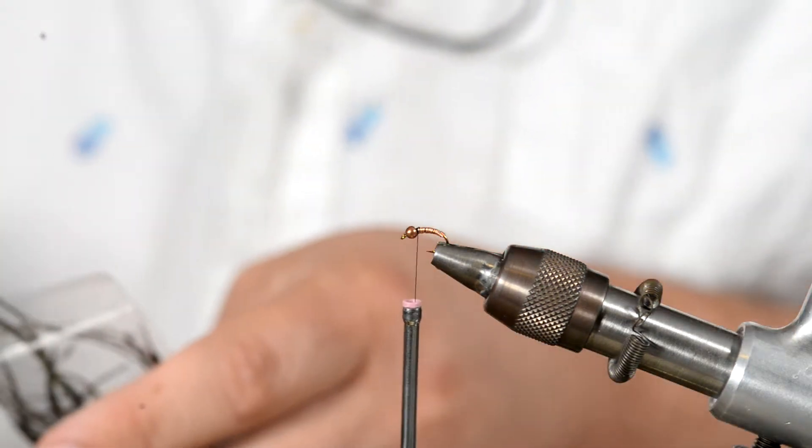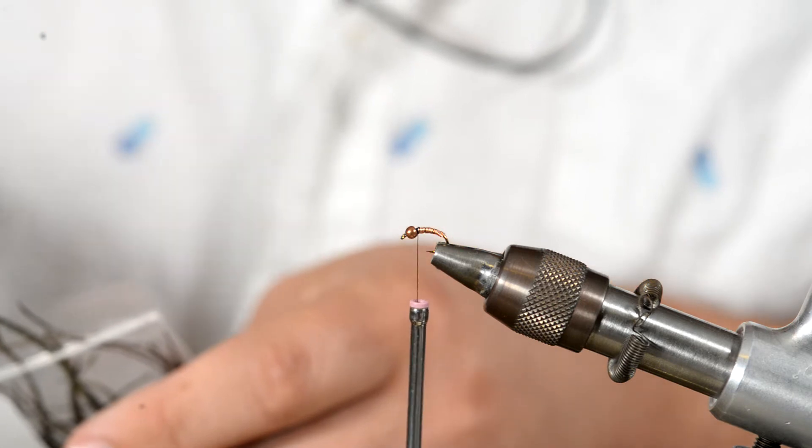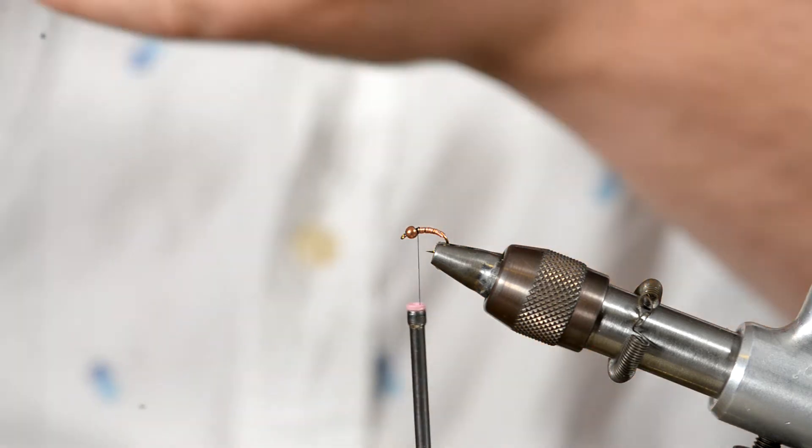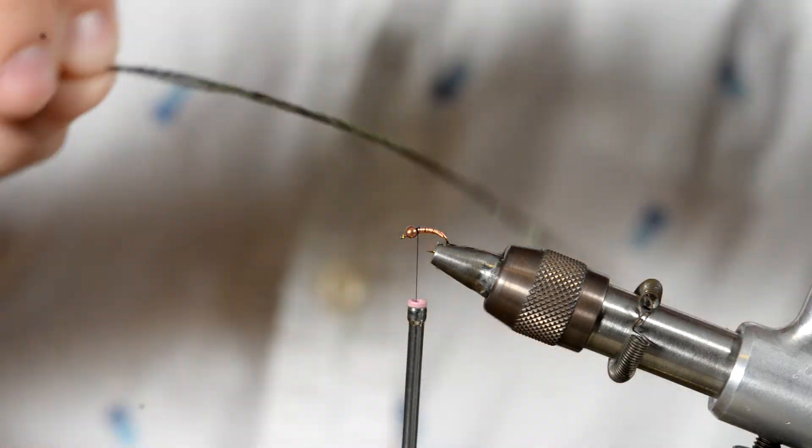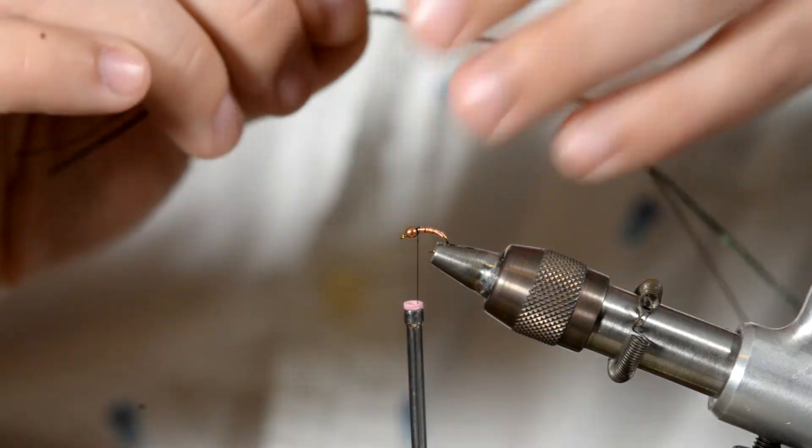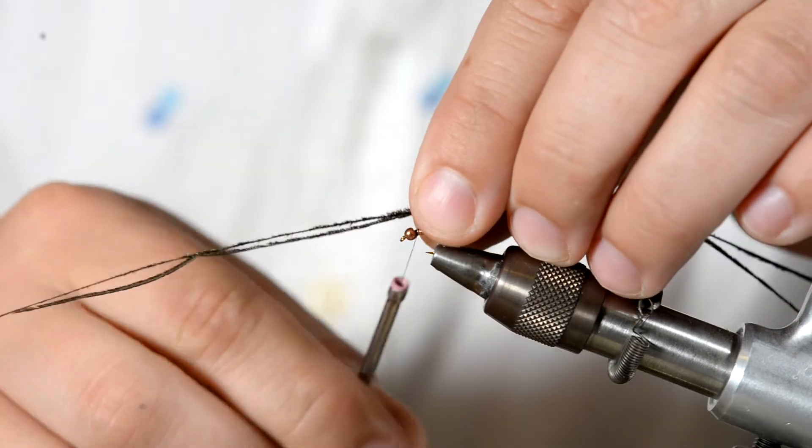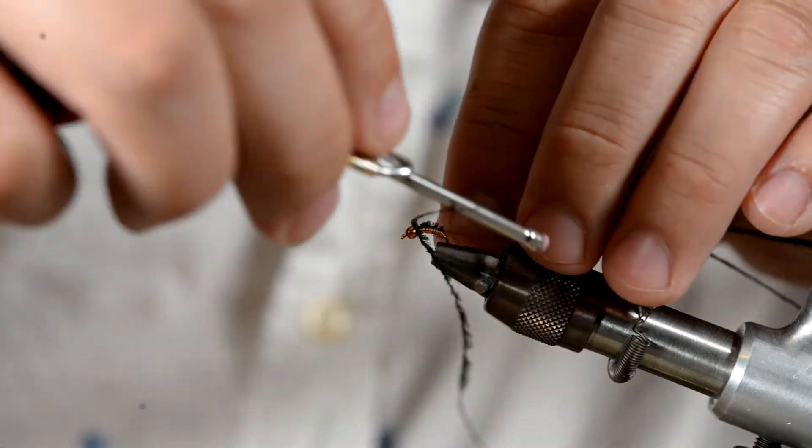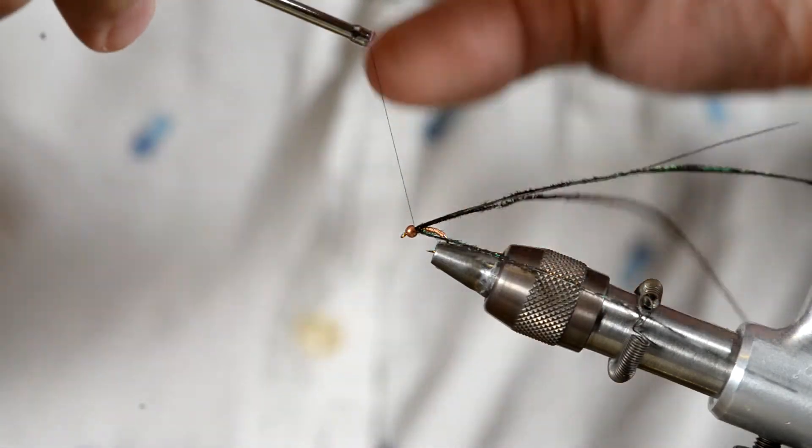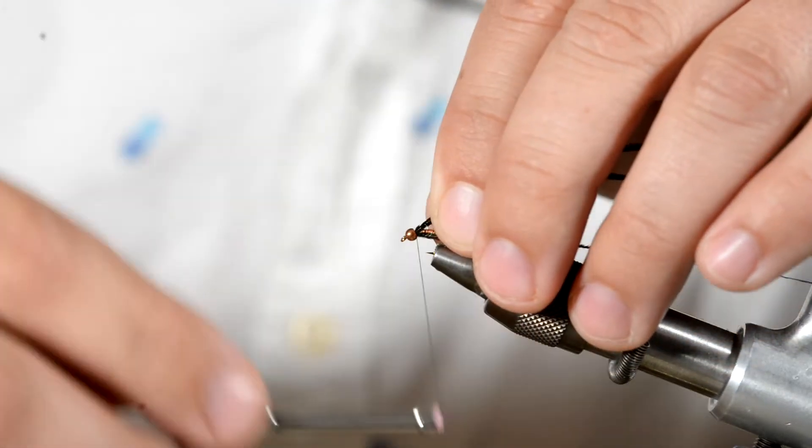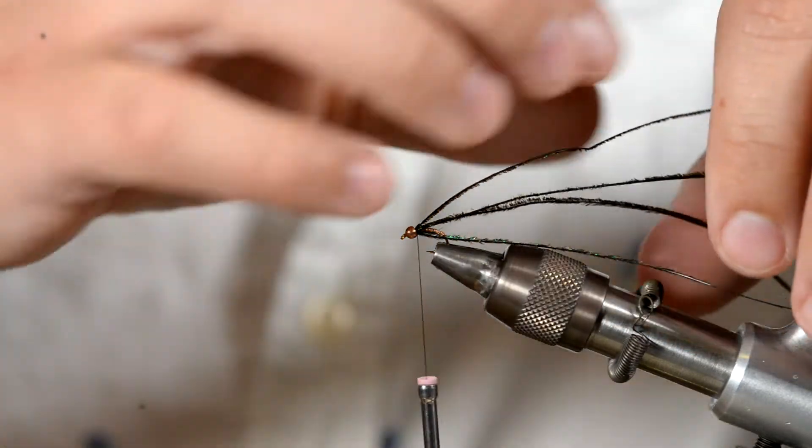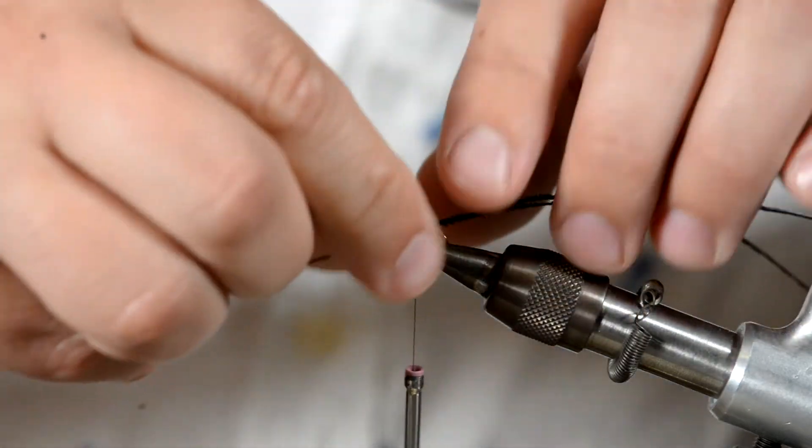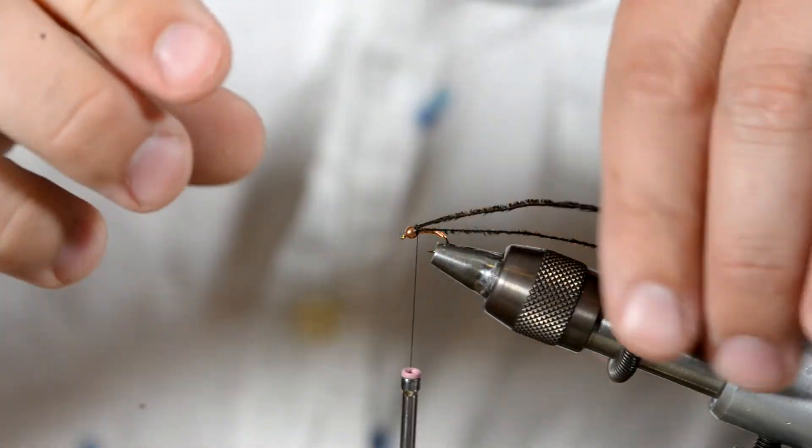Take your peacock herl and you can do this with one strand but a quick trick that I found in order to tie this a lot quicker is just to use two strands because it helps as far as building up that bulk rather quickly. The reason why I'm tying it in the middle here is these ends on this peacock herl look to be a little brittle so I'm just gonna tie it in the middle where the herl is a little bit thicker.